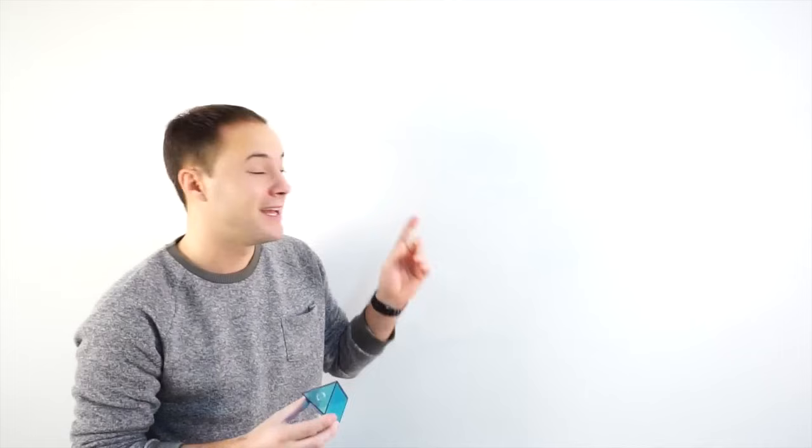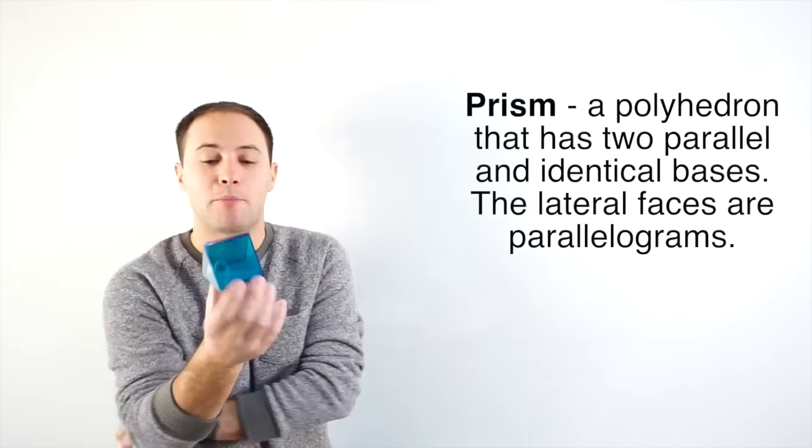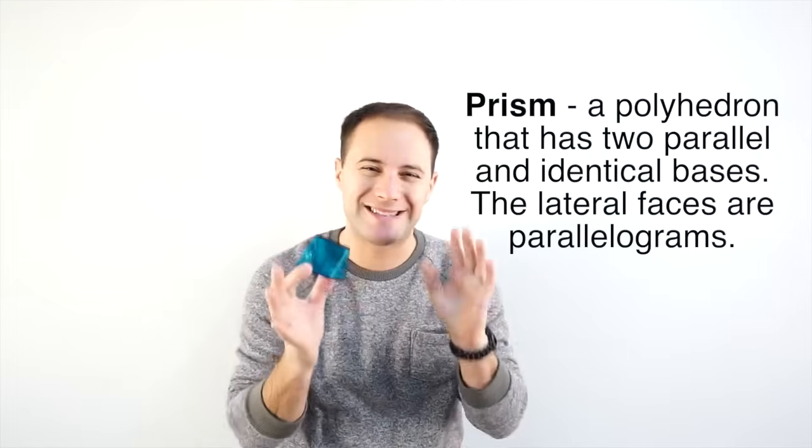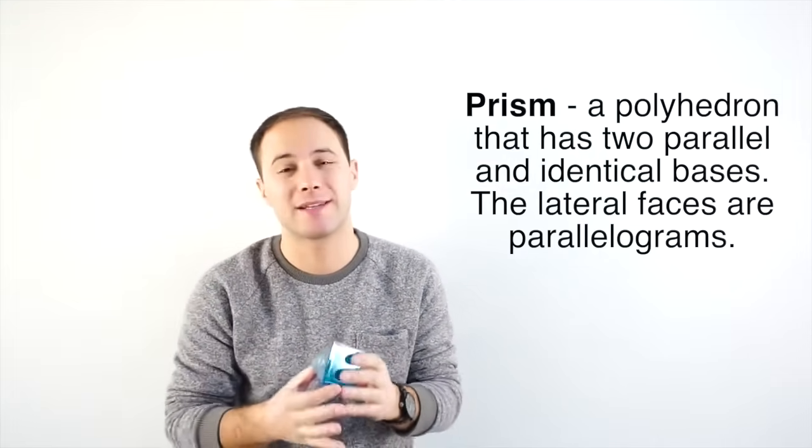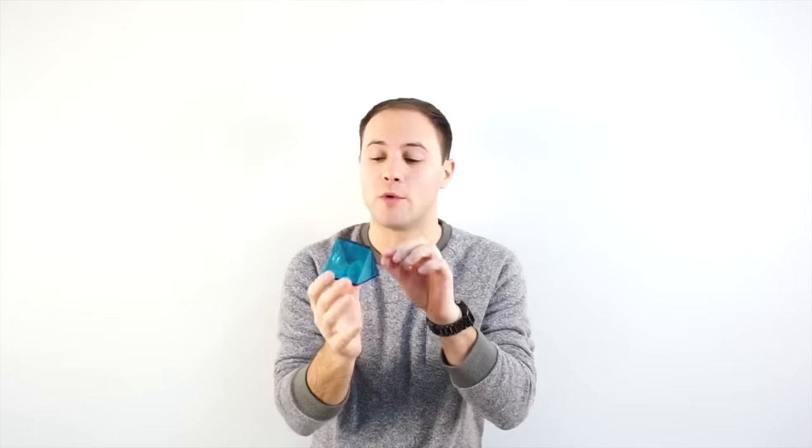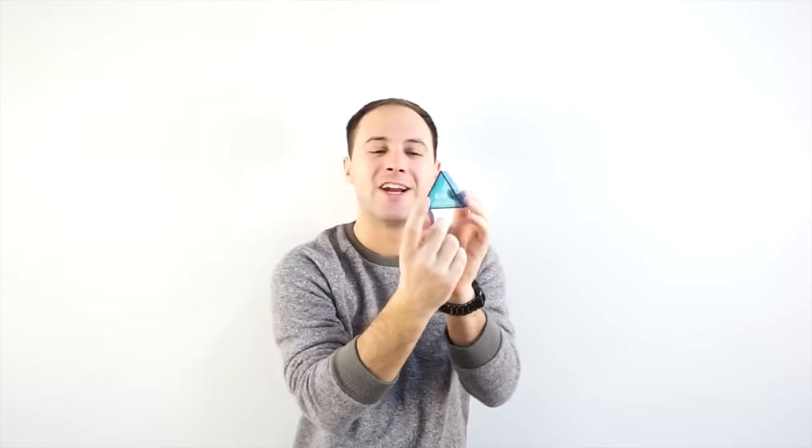Next, we're going to talk about a couple of very common polyhedrons. The first is a prism. A prism is a polyhedron that has two identical parallel bases — and we're not talking about base like in two-dimensional area formulas. We're talking about sides or faces as the bases. For example, this is a triangular prism. The reason it's a triangular prism is because the bases are triangles. You name the prism after the base.